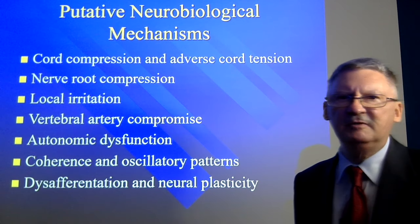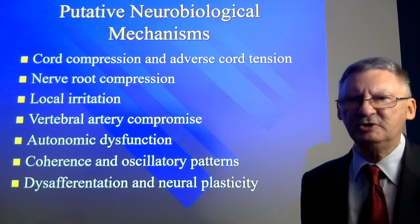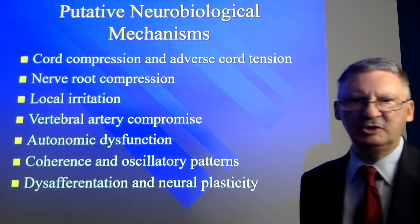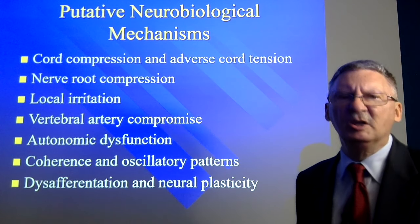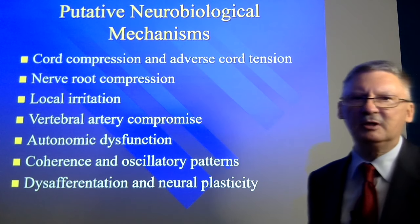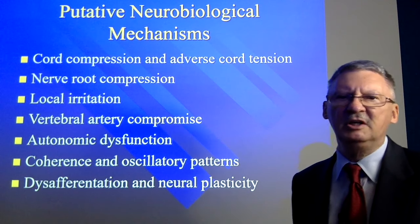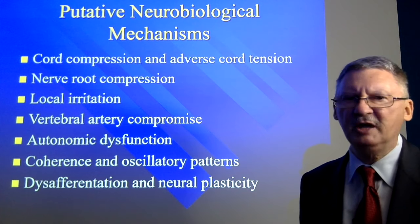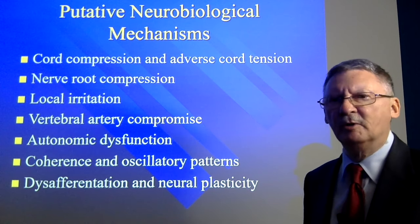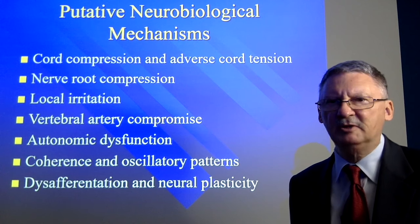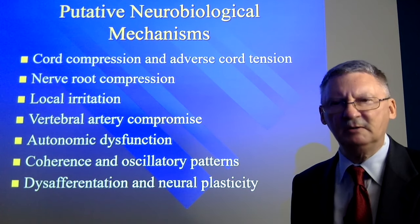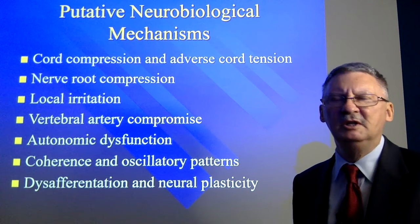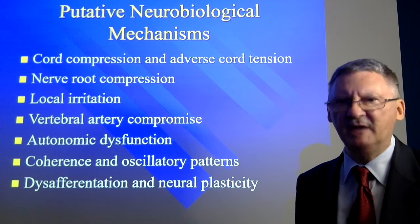The putative neurobiological mechanisms associated with vertebral subluxation include cord compression and adverse cord tension, nerve root compression, local irritation, vertebral artery compromise, autonomic dysfunction, changes in coherence and oscillatory patterns, and disafferentation and neuroplasticity. Neuroplasticity is particularly exciting because there's evidence that not only can the nervous system rewire itself in response to inputs, it can also produce anatomical change.